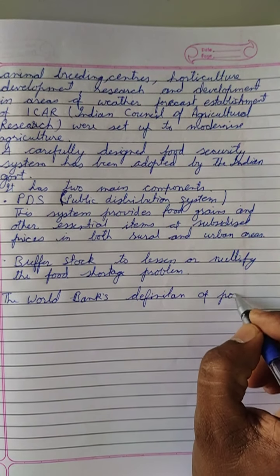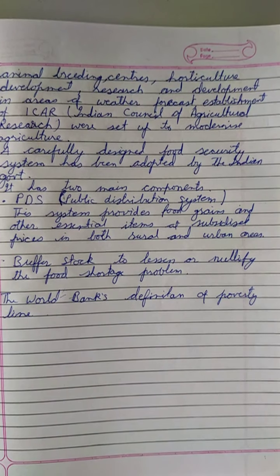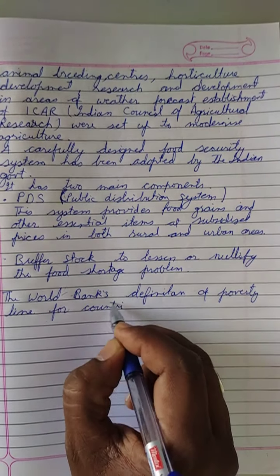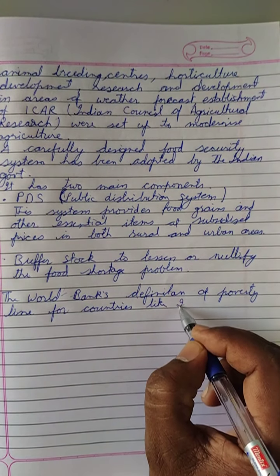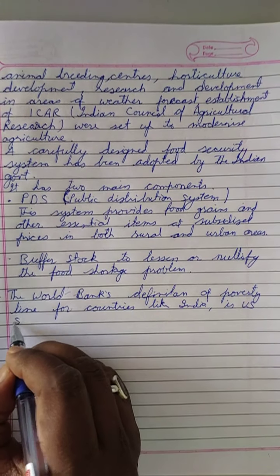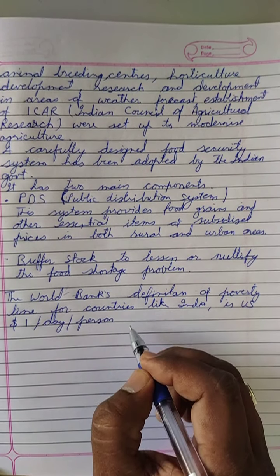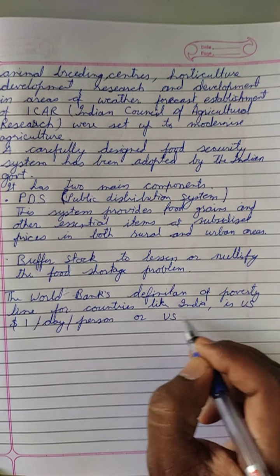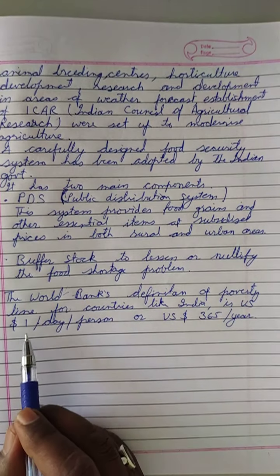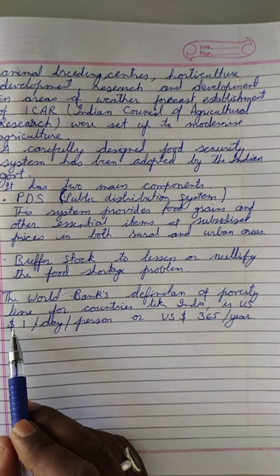The notion of the poverty line — there are two types: BPL and APL. The poverty line for countries like India is US $1 per day per person, or US $365 per year per person, since there are 365 days in a year.